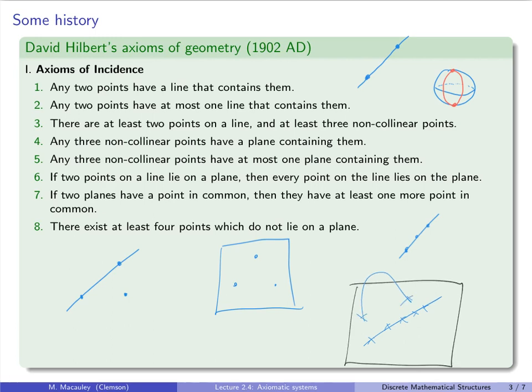Seven, if two planes have a point in common, then they have at least one more point in common. Hopefully, that should make sense. You can't have two planes that only intersect at a single point. And by plane, I mean they go on forever in both directions. They have to meet, if they're going to meet, they're going to meet in at least a line.